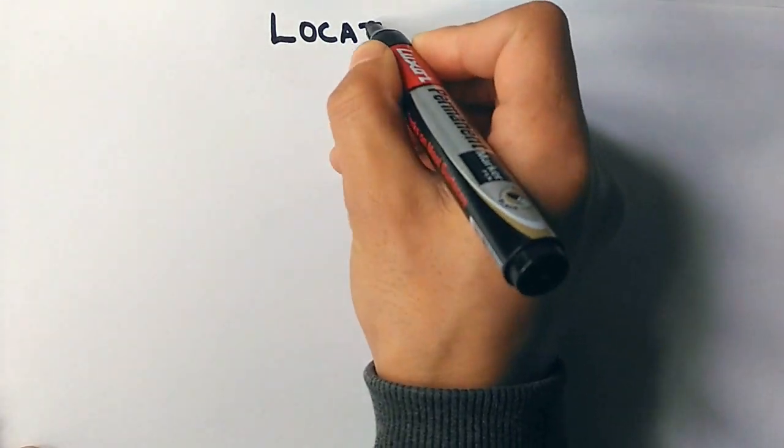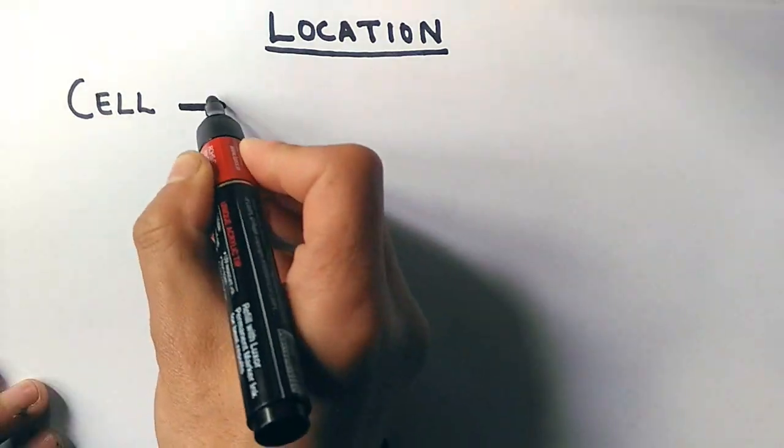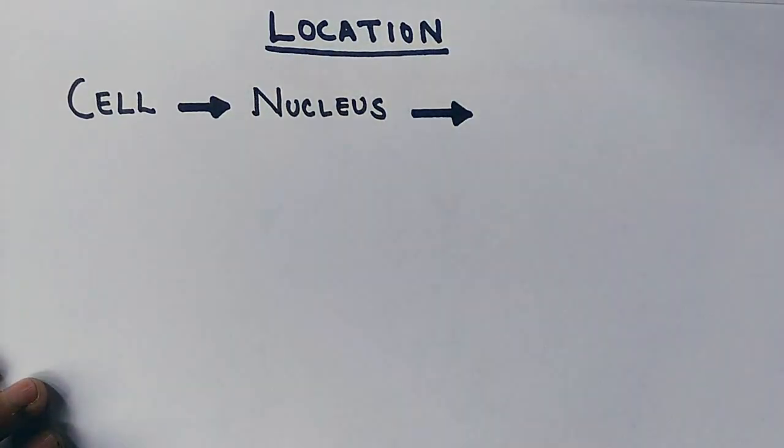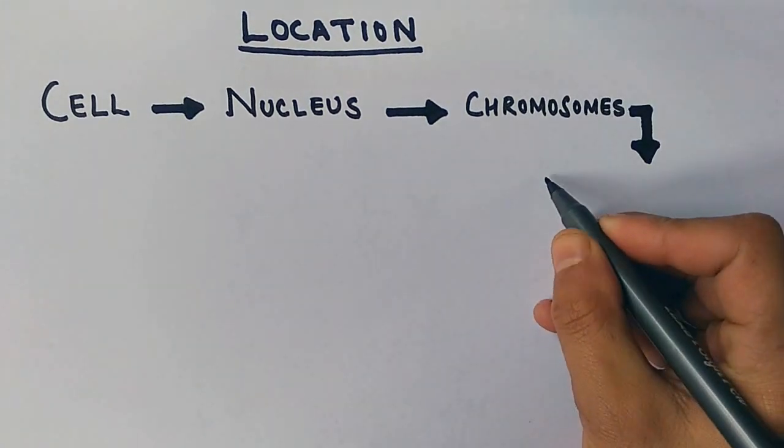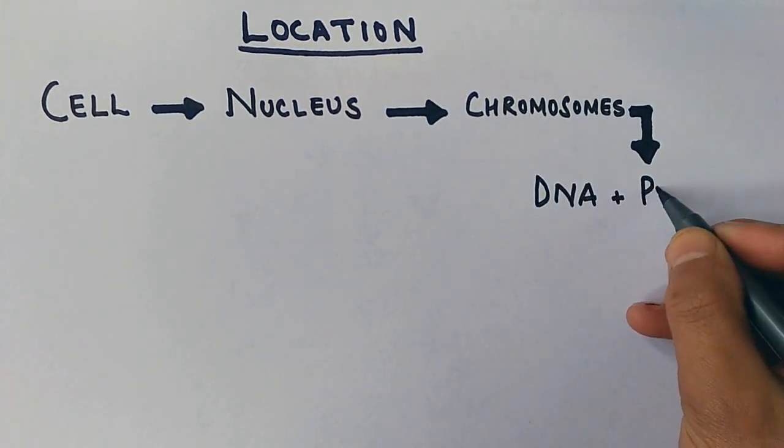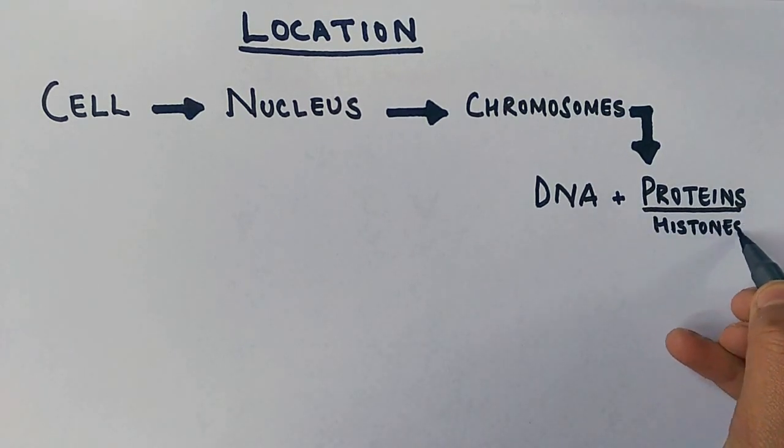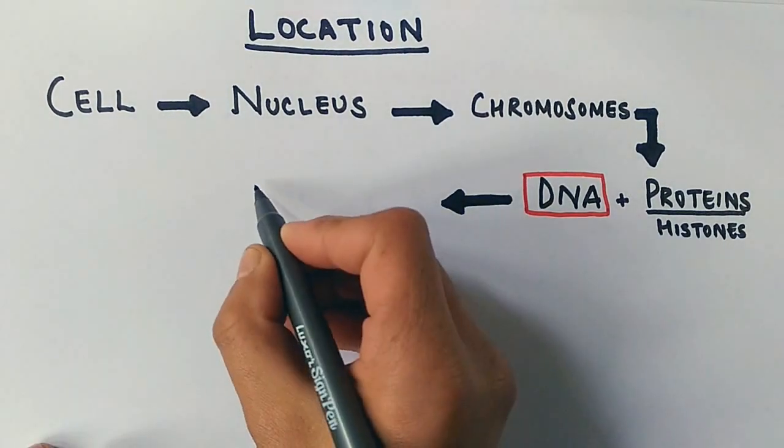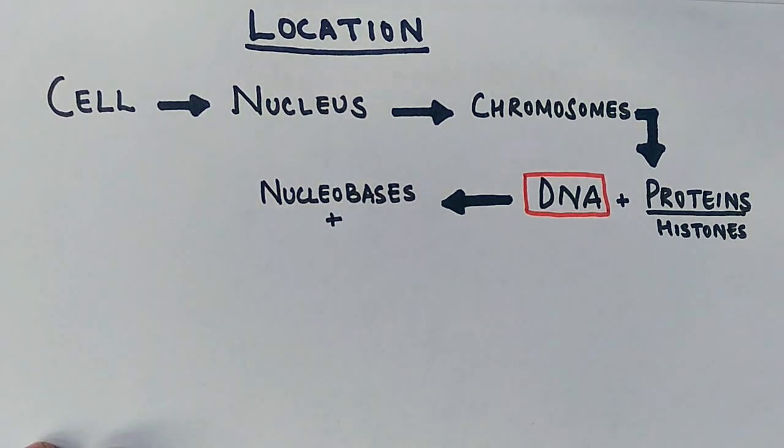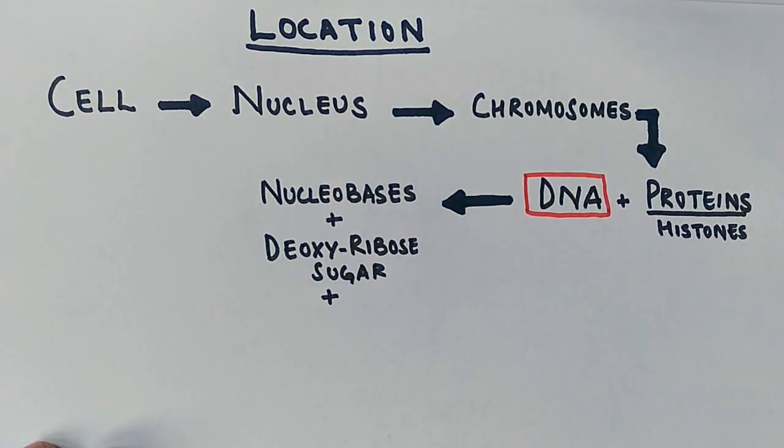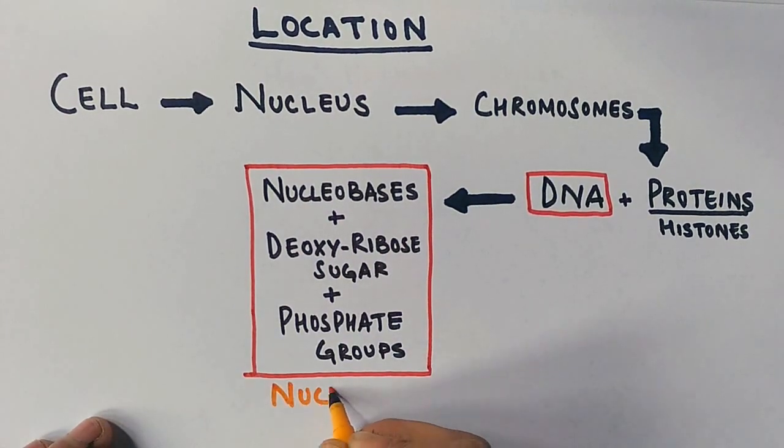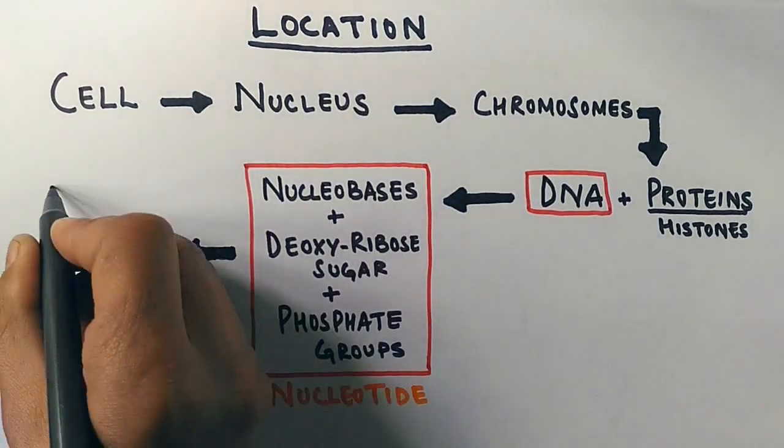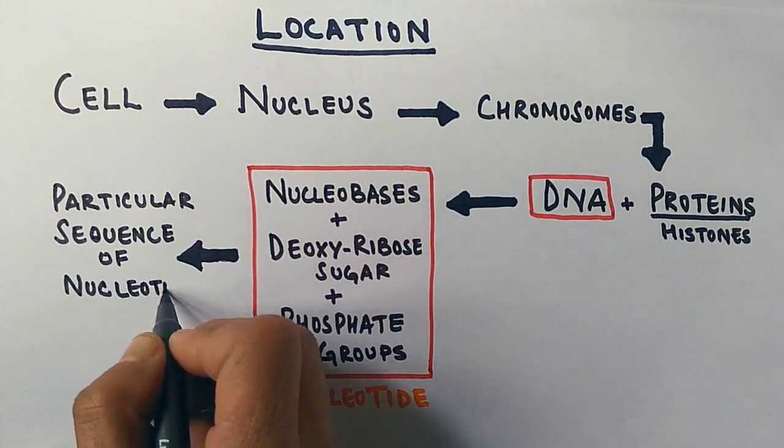Now let's find out where this gene resides in the cell. We have a cell, then we get into the nucleus and this nucleus contains chromosomes, and this chromosome in turn contains DNA plus proteins, and proteins are mostly the histones. And the DNA is made up of nucleobases, that's A, G, T, C, deoxyribose sugar and phosphate groups, and these three quantities make a nucleotide.